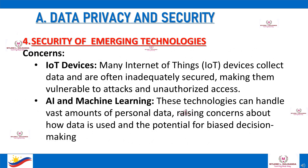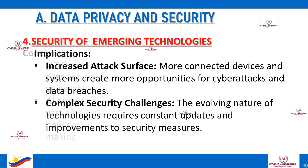Number 4 is the security of emerging technologies. IoT devices — many Internet of Things devices — collect data and are often inadequately secured, making them vulnerable to attacks and unauthorized access. AI and machine learning technologies can handle vast amounts of personal data, raising concerns about how data is used and the potential for biased decision-making. Implications include an increased attack surface, as more connected devices create more opportunities for cyberattacks, and complex security challenges requiring constant updates to security measures.